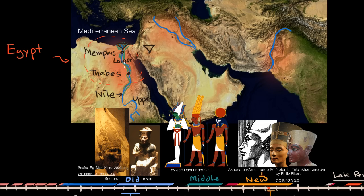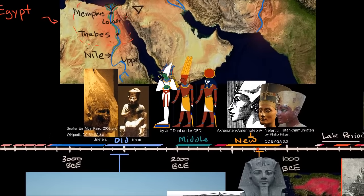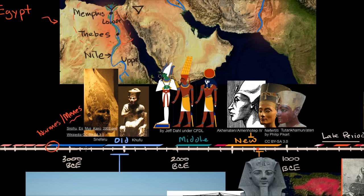People lived in this valley for thousands of years, but we formally talk about ancient Egypt as a civilization beginning around 3150 BCE. This is when we believe that upper and lower Egypt were first united under a king — sometimes called Narmer, sometimes Menes — who unified upper and lower Egypt into an empire.